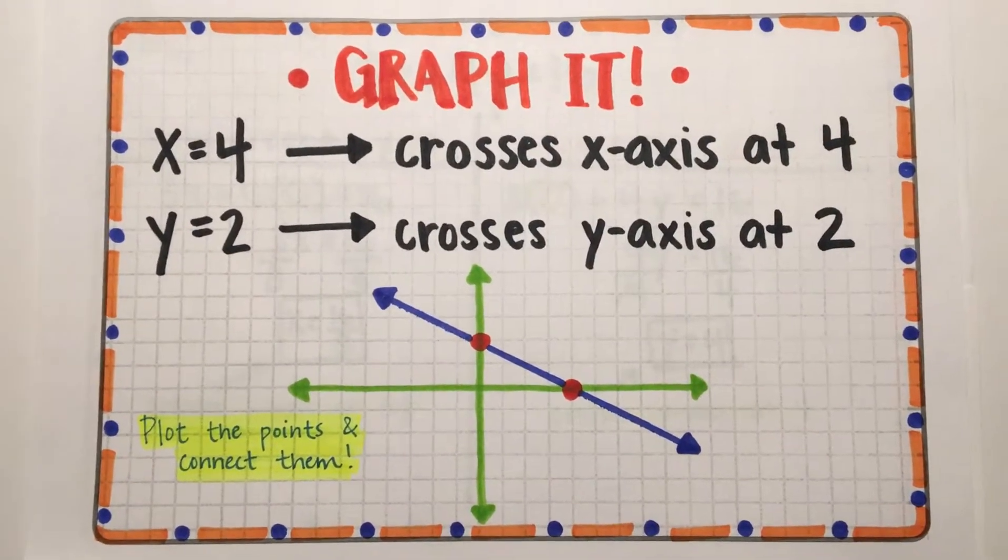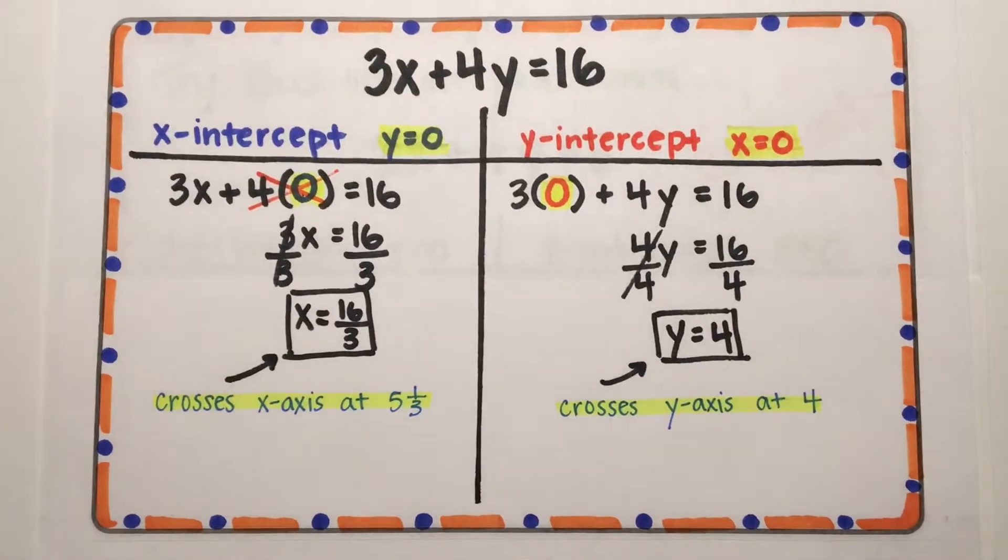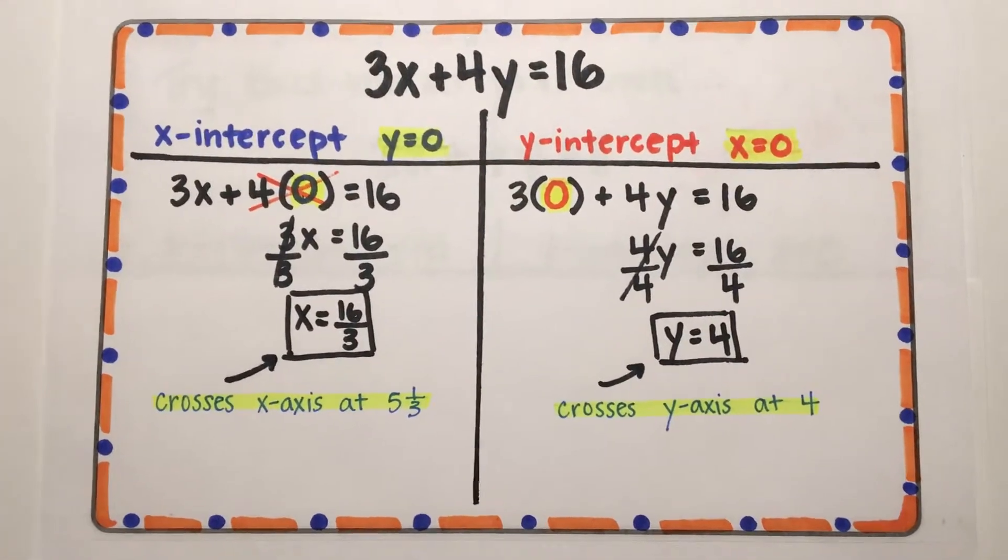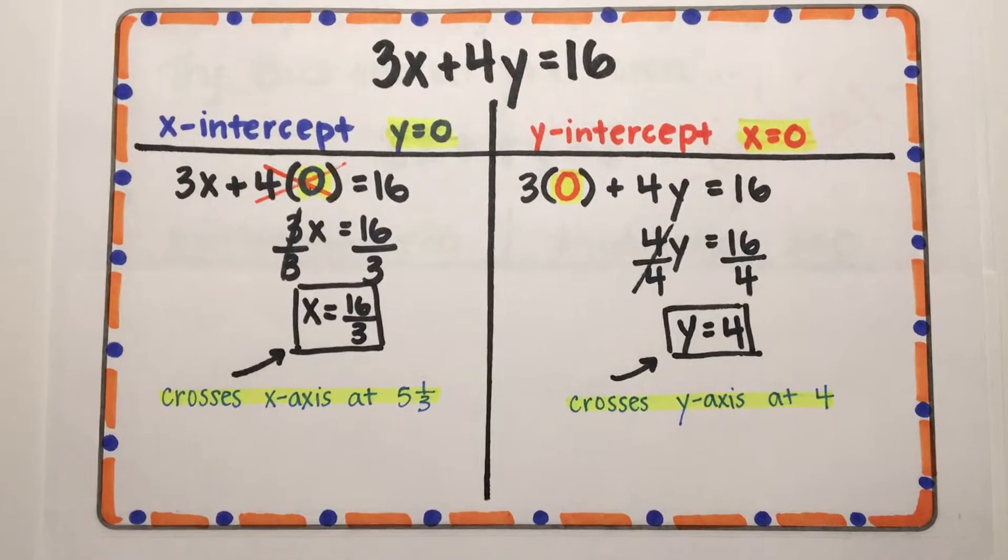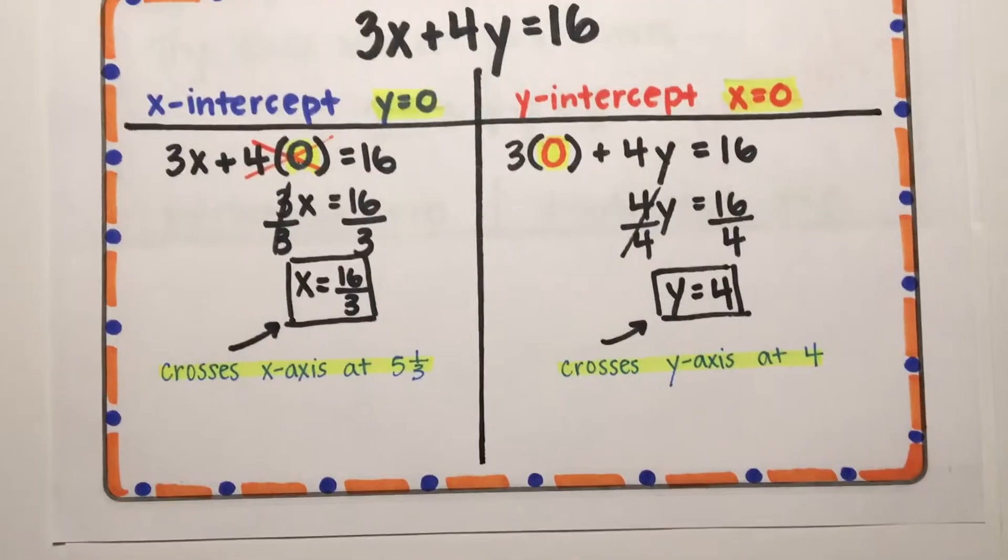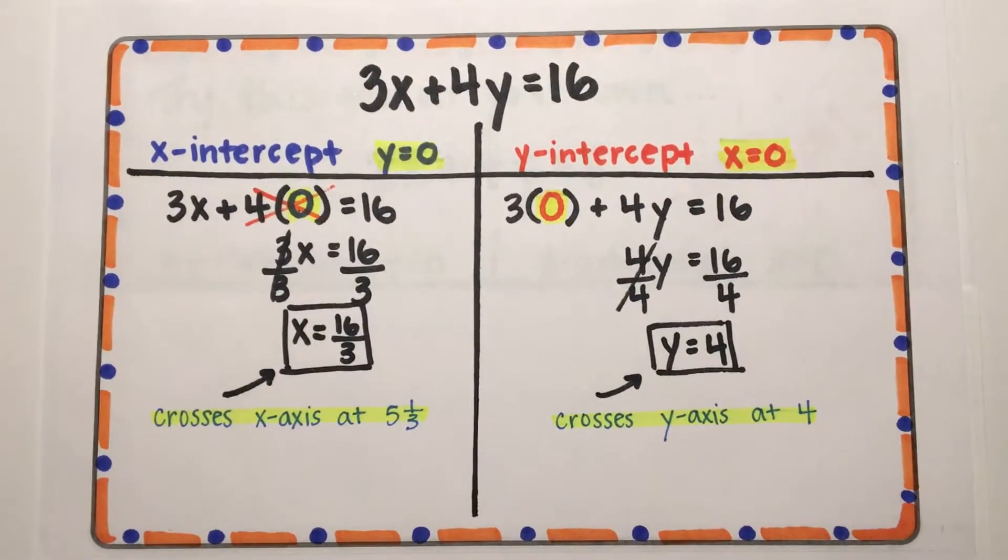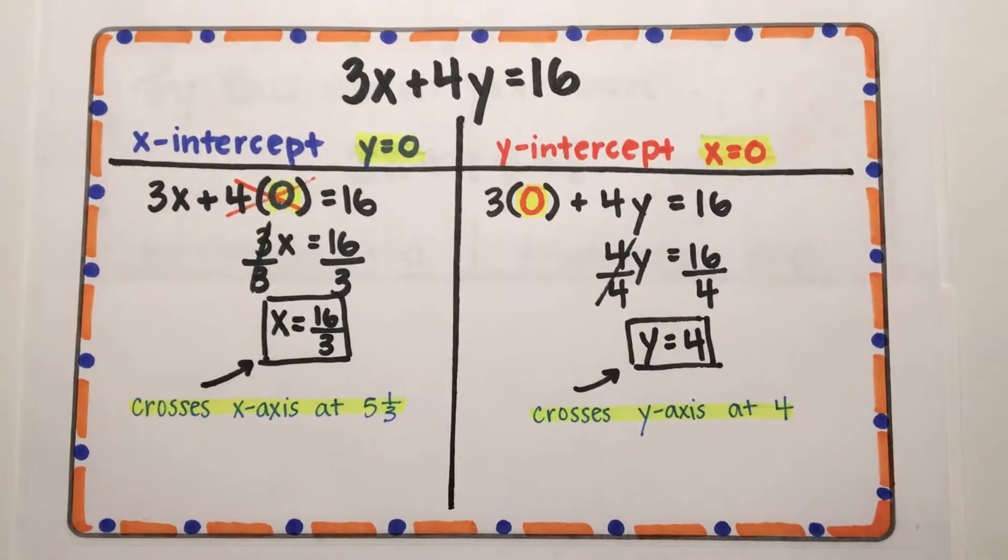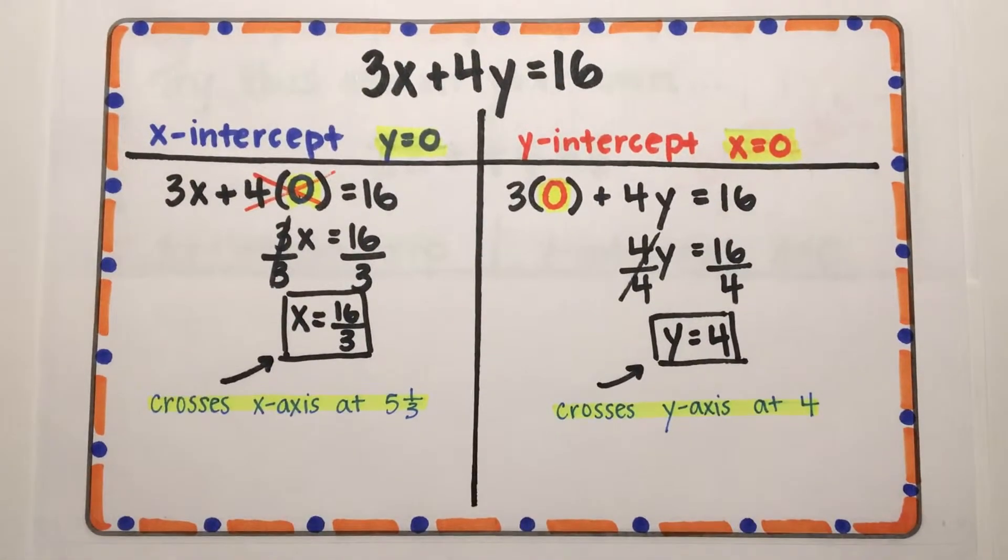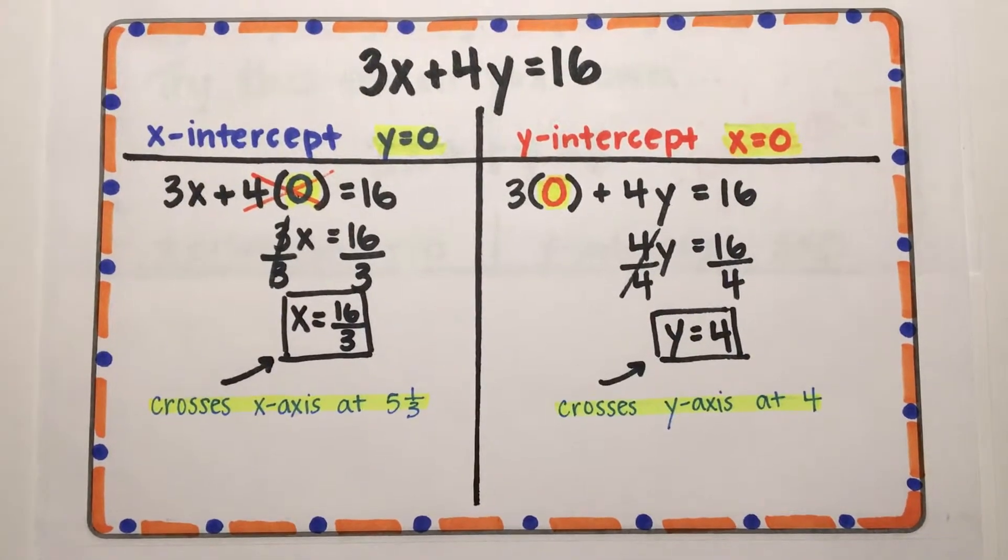The kind an evil teacher would probably put on a test. Here we have another equation in standard form. To find your x-intercept, replace y with 0. 0 times 4 cancels out. Then solve for x by dividing by 3 on both sides. So the graph crosses the x-axis at 5 and 1-third.